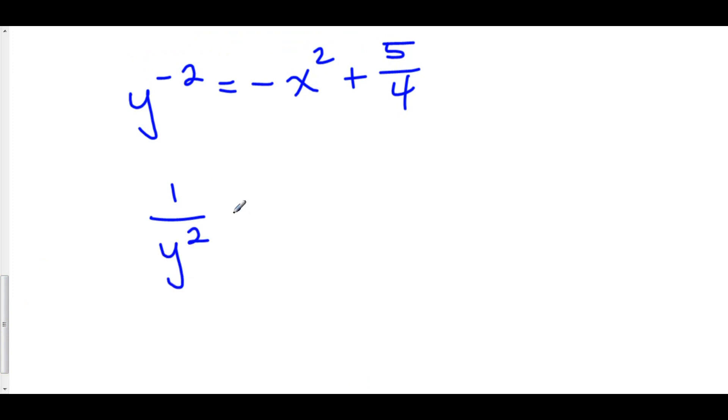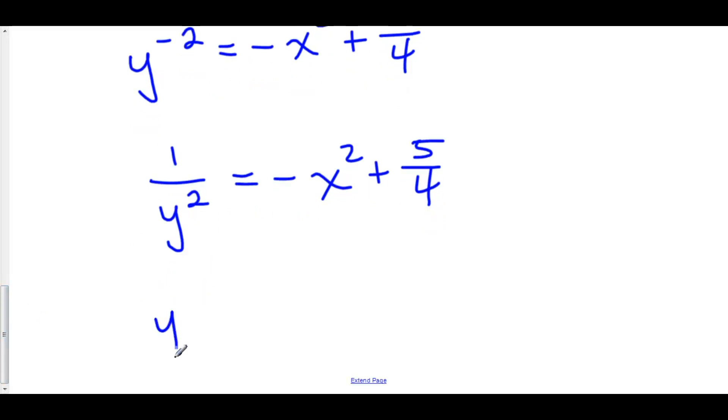So we have 1 over y squared is equal to negative x squared plus 5 over 4. A pretty nifty trick in order to solve for a variable that's in the denominator is just to flip both sides. But if I flip the left hand side to get y squared I have to flip the entire right hand side. So we have 1 over quantity negative x squared plus 5 over 4.